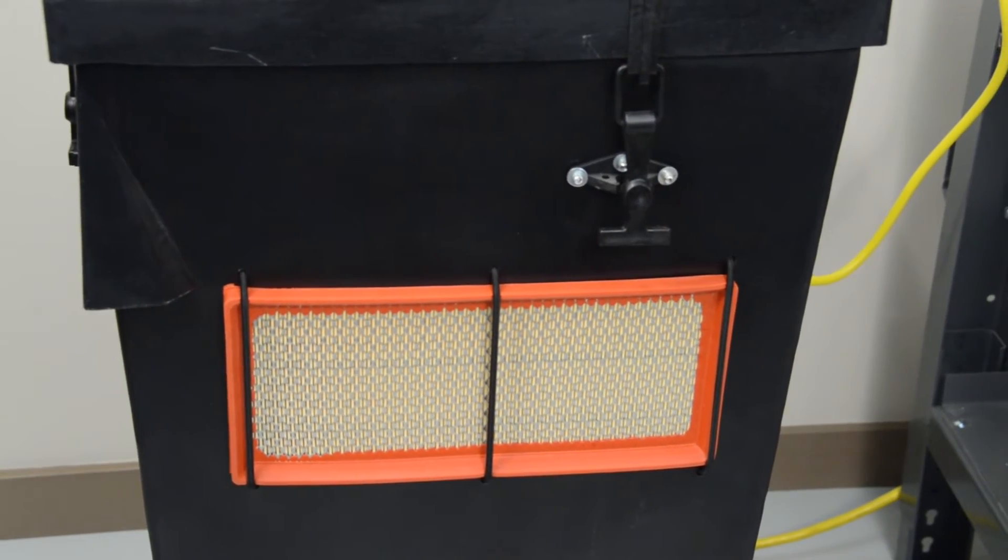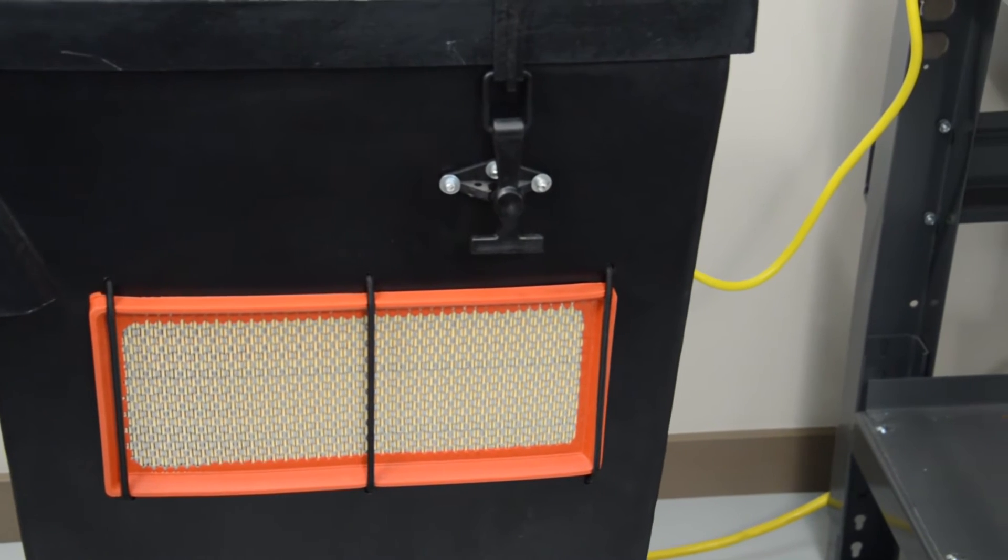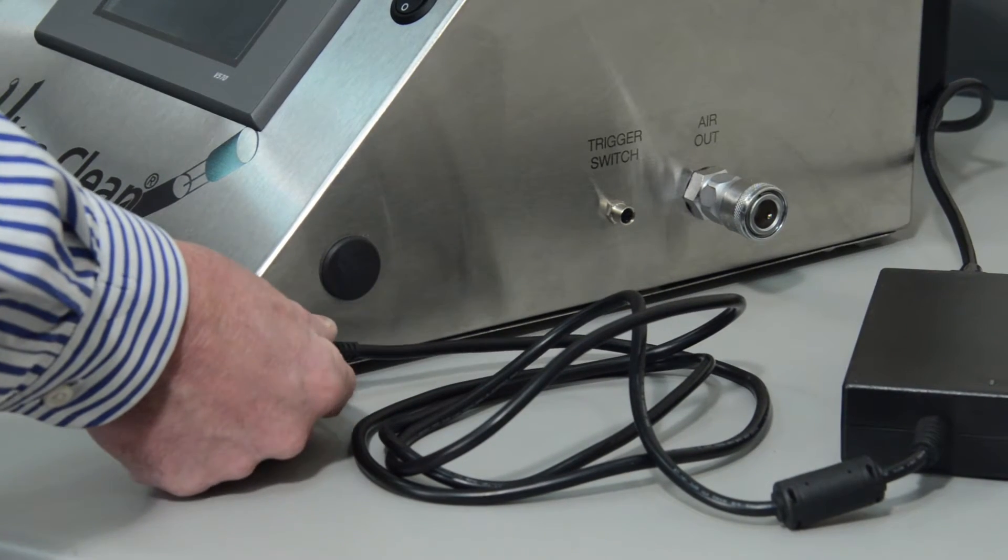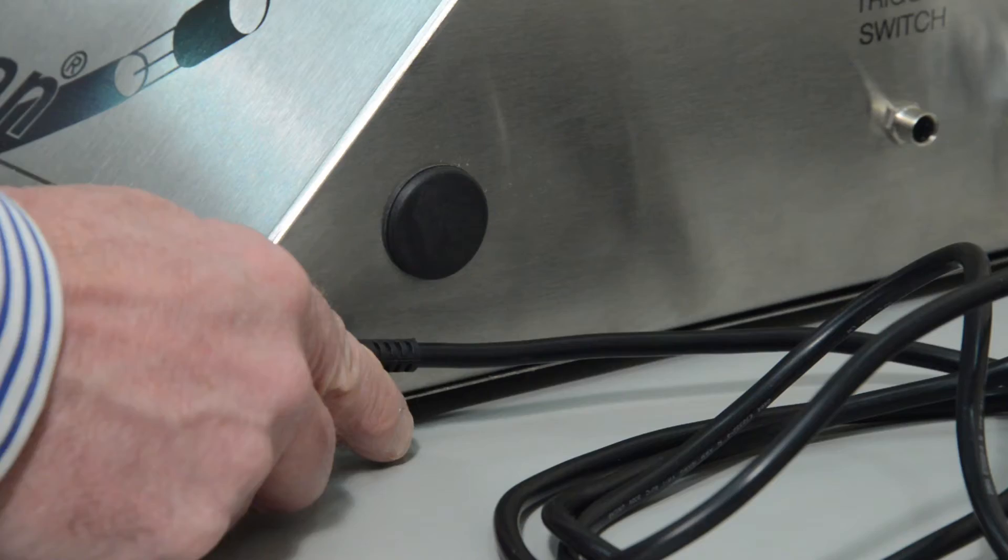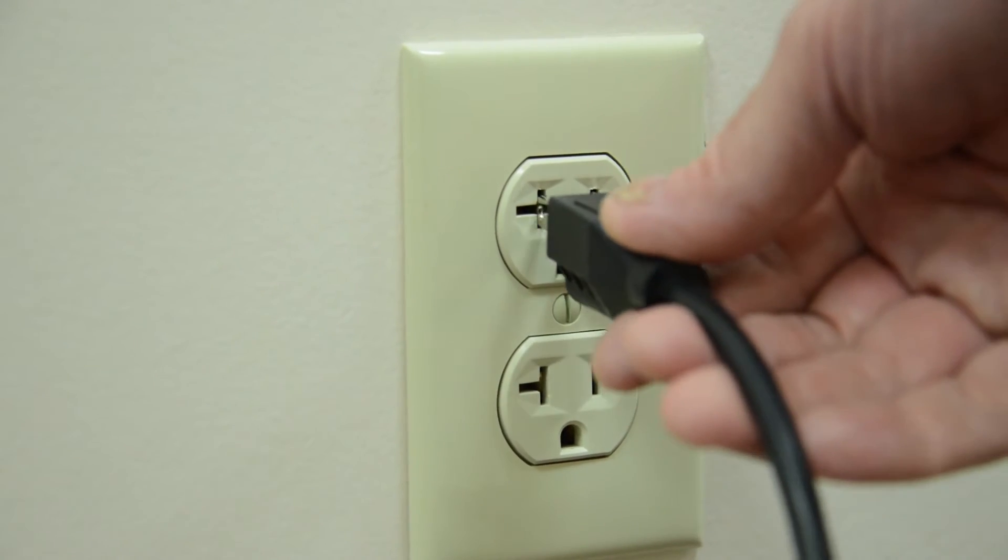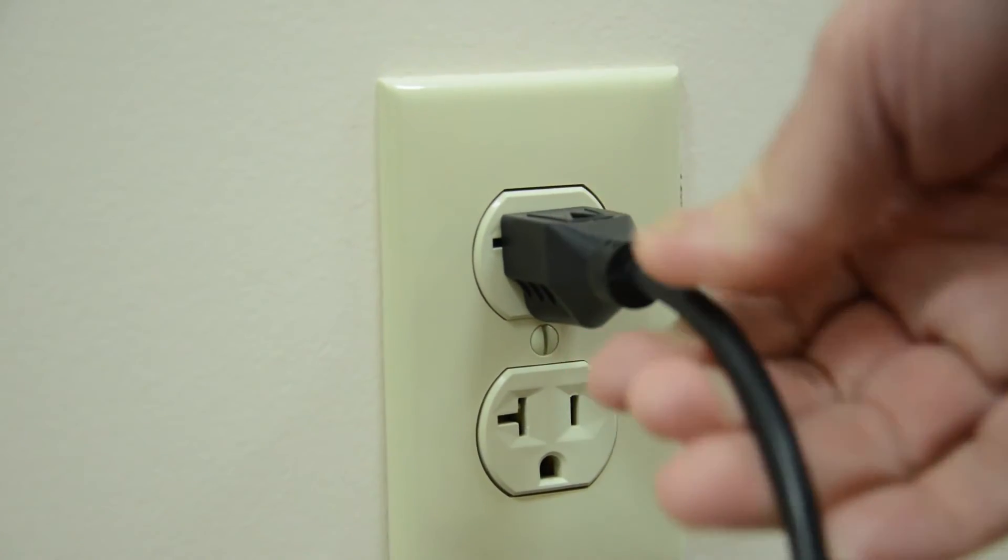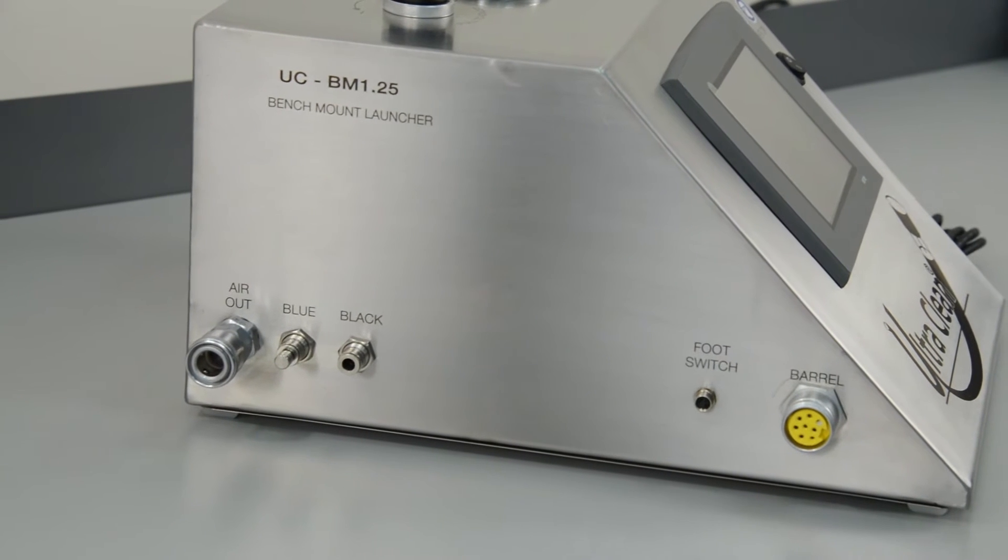The filter ensures that clean air is returned to the work area. Connect the 24-volt power supply to the right side of the control station and the plug end into the appropriate electrical connection.